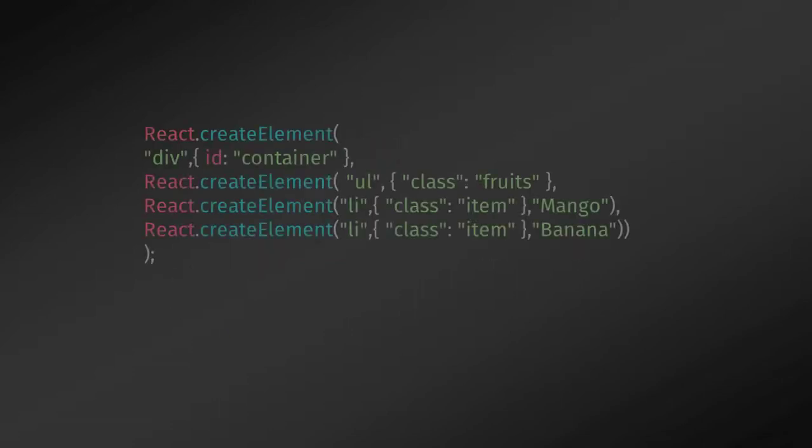If you are using the createElement method to create this simple fruit list, the code would look like this — you have your division tag as the container, inside it a ul tag and two nested li tags. If you try to read this code and create an output in your mind, it is very complicated to read and understand. So let's see how to create nested elements using JSX.